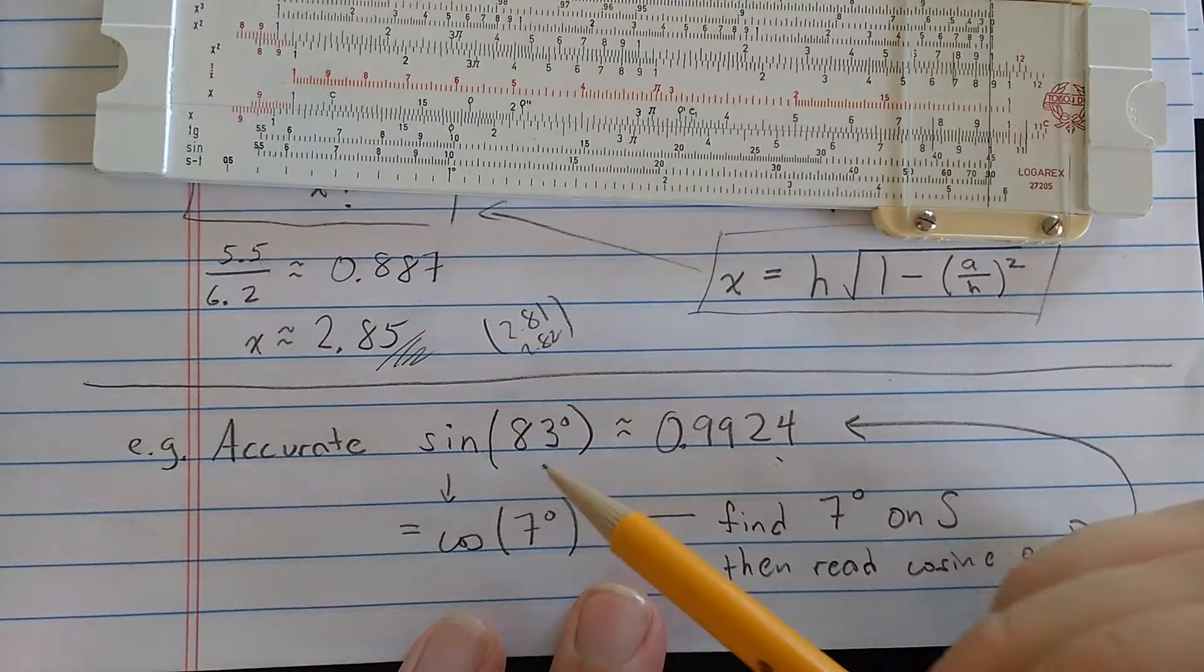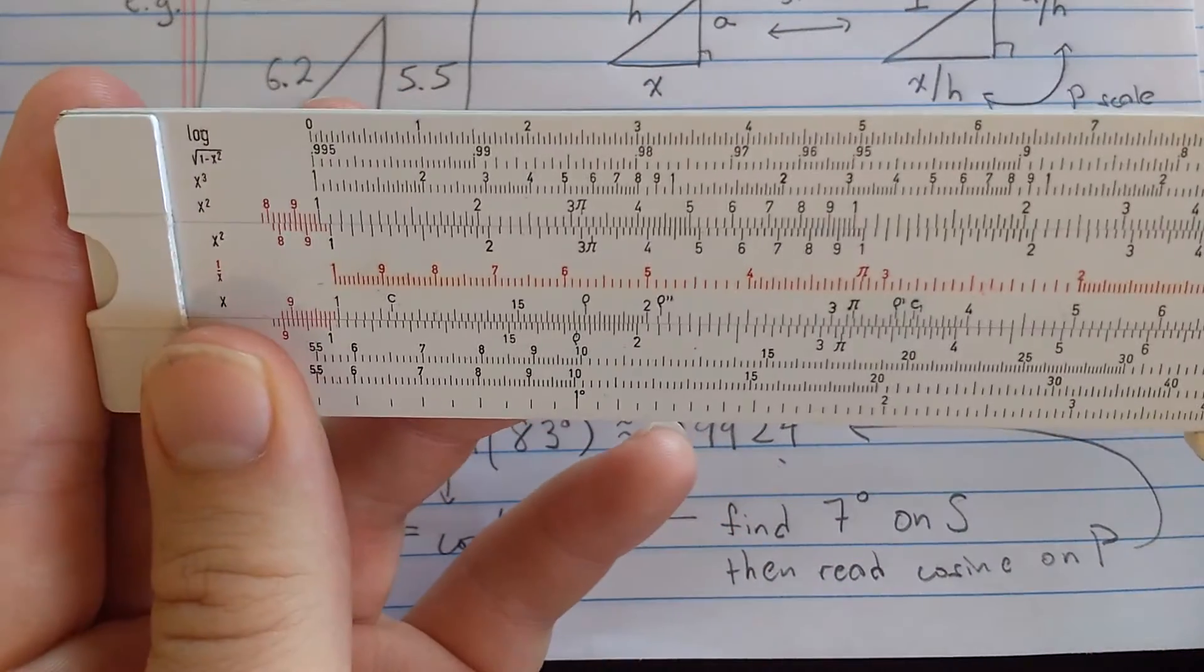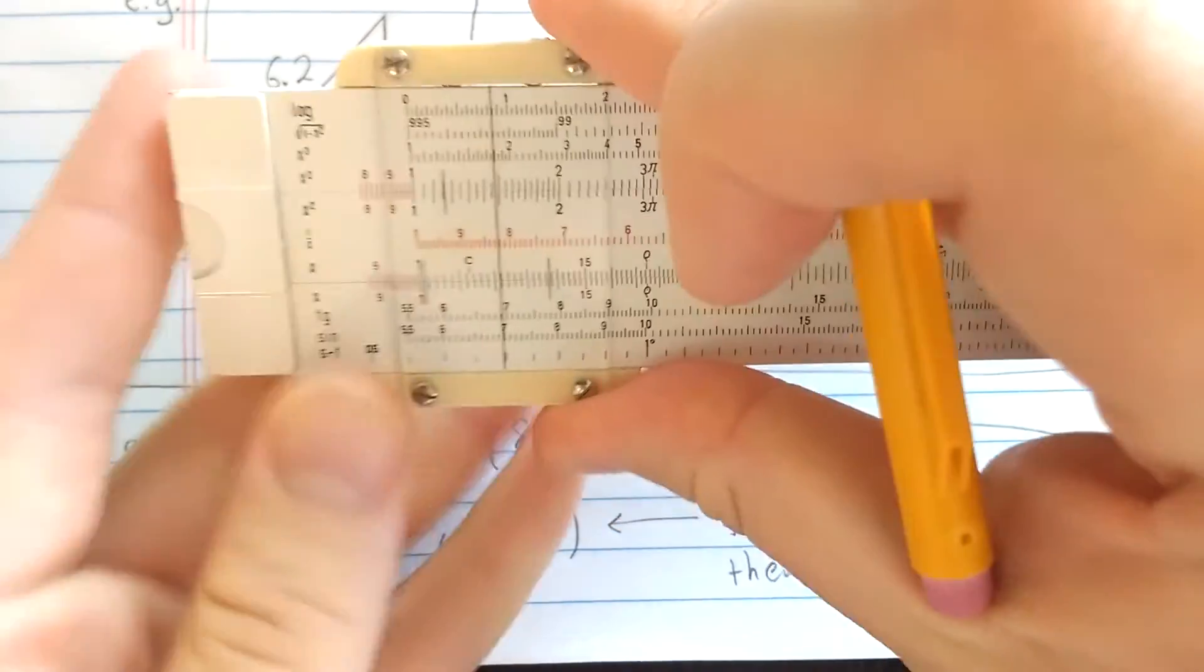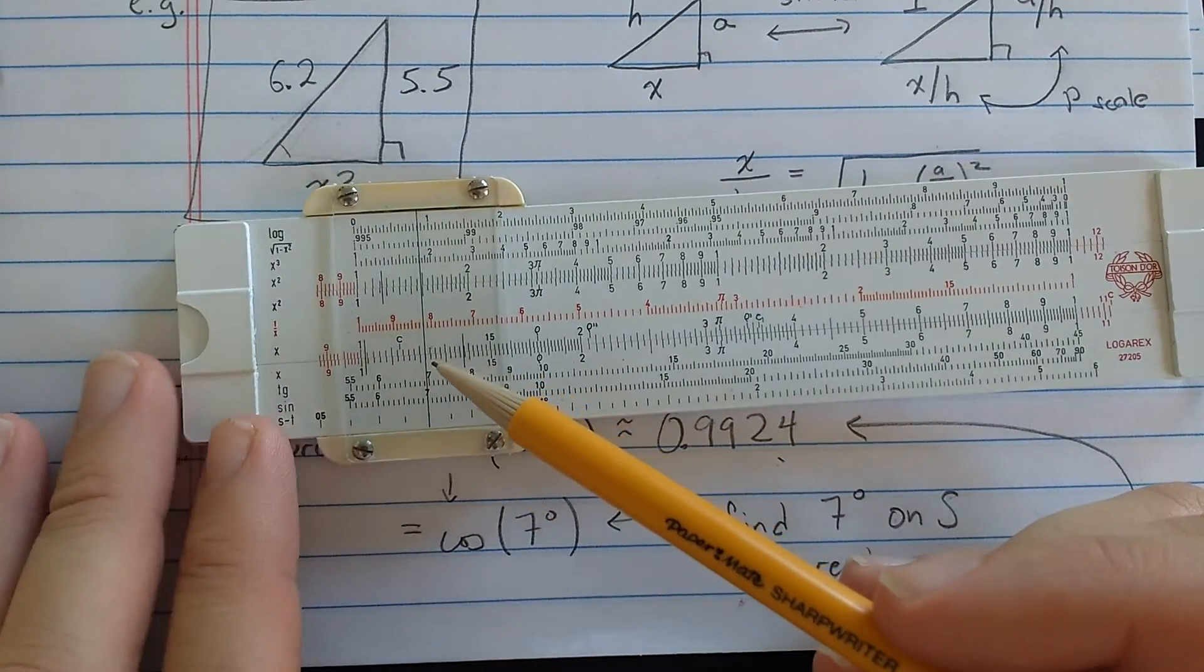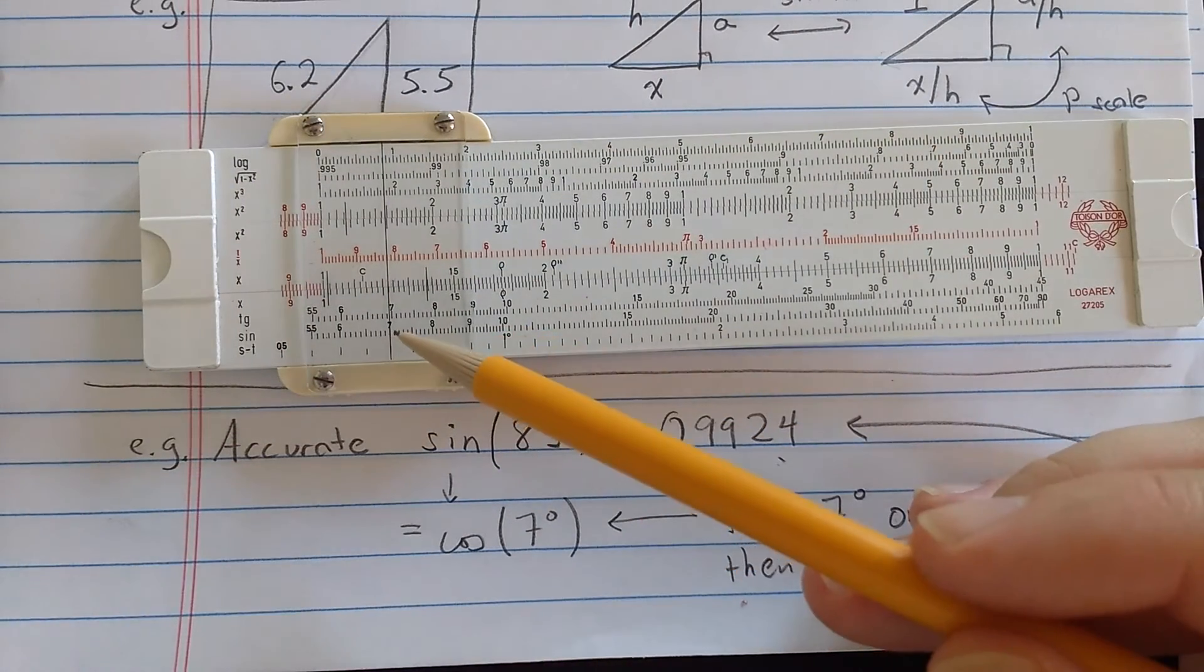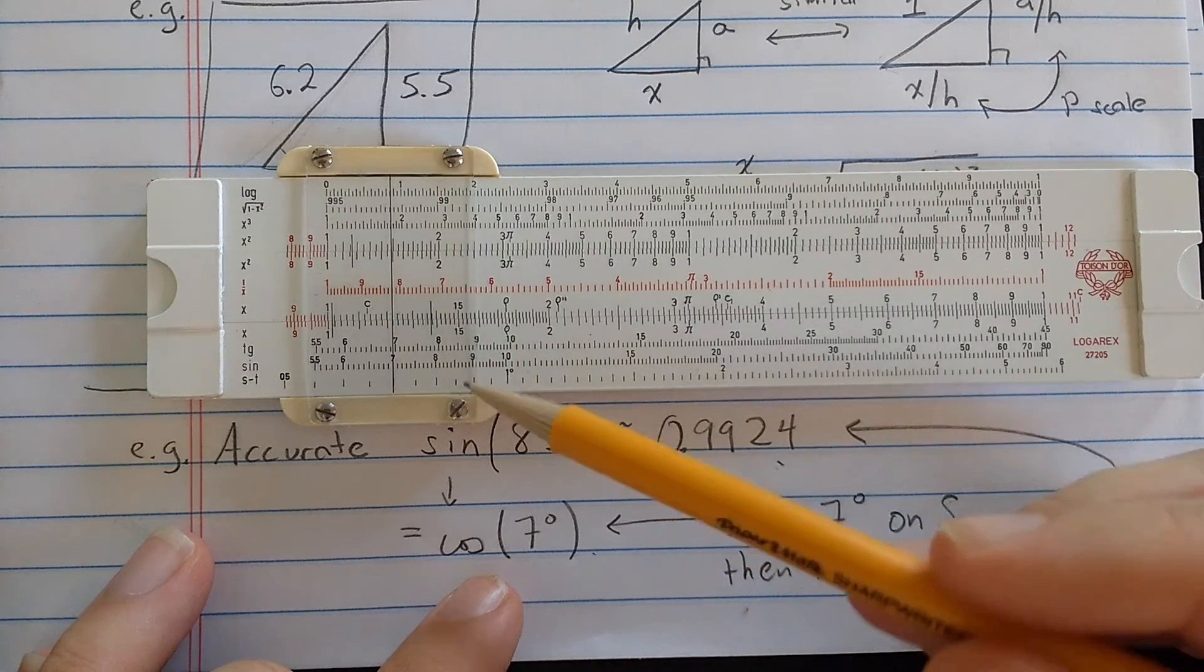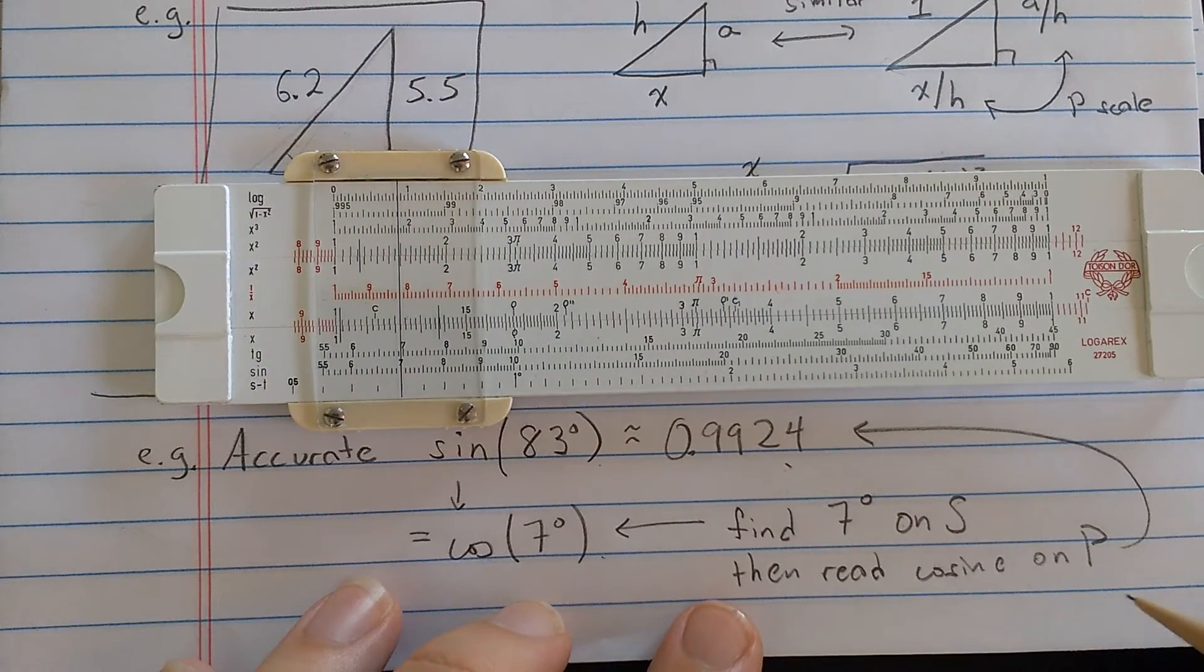So with the P scale, I can actually resolve sine of 83 degrees to this resolution. How do I do that? Well, sine of 83 degrees is cosine of the complement, 7 degrees. So instead of 83 degrees, let me find on the S scale here, second from the bottom, the 7 degrees. So if I find on the sine scale 7 degrees, try to do it accurately here. So I found on the sine scale 7 degrees. So what's reading on the D scale now should be sine of 7 degrees. But I don't want sine of 7 degrees. I want sine of 83 degrees.